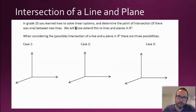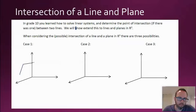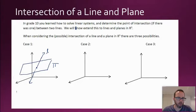We will now extend this to lines and planes in R3. So what are the possible intersections of a line and a plane? Case one: you have some plane, you have some line, and it's possible that the line pokes through the plane and intersects the plane at exactly one spot. That's our first case — there is one point of intersection.